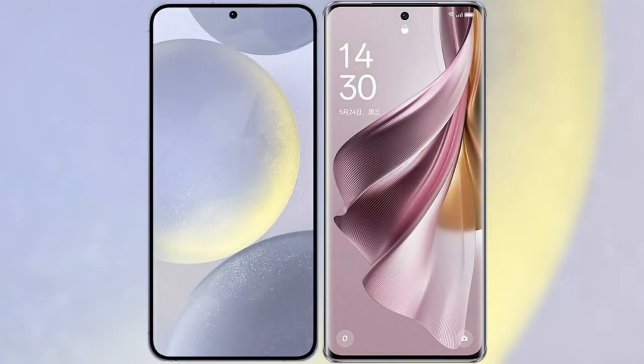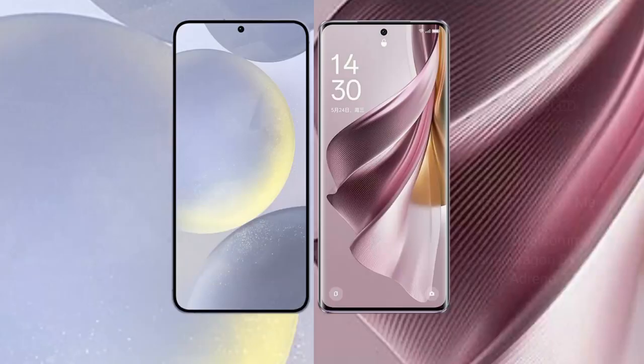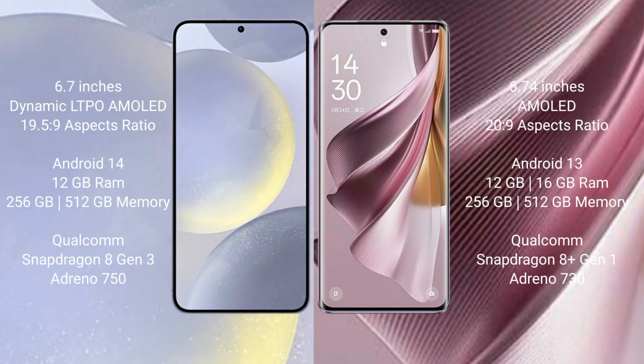I will compare the new Samsung Galaxy S24 Plus with the OPPO Reno 10 Pro Plus. The Samsung Galaxy S24 Plus comes with a 6.7-inch Dynamic LTPO AMOLED display, while the OPPO Reno 10 Pro Plus features a 6.74-inch AMOLED display.